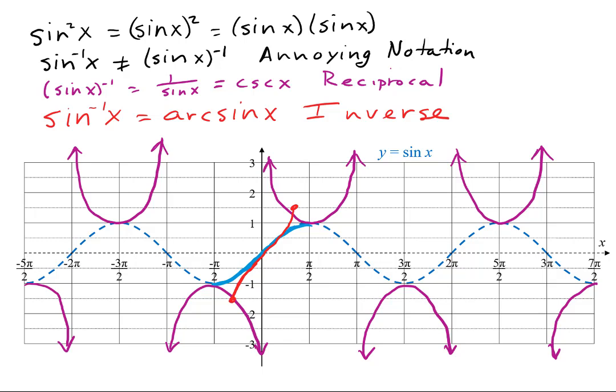That red curve does not continue. It stops right there at those dots. That's all there is to it. It's definitely very different from the reciprocal curve, even though the notation is very similar.